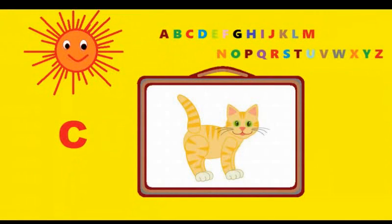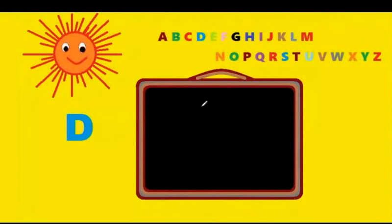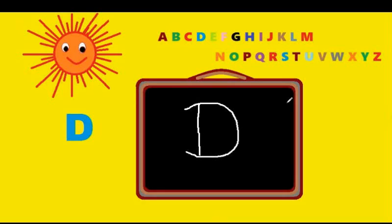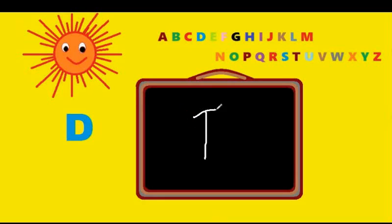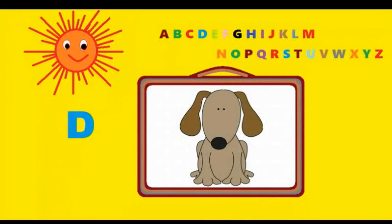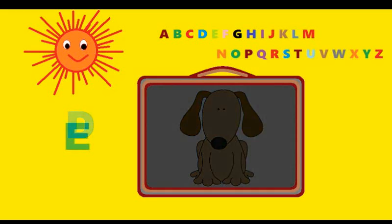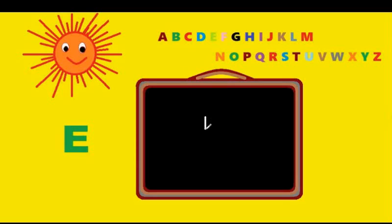D. You have to start from the top, come down, round the corner. You have to start from the top, make a standing line and draw a half circle. That's D. D is for dog.